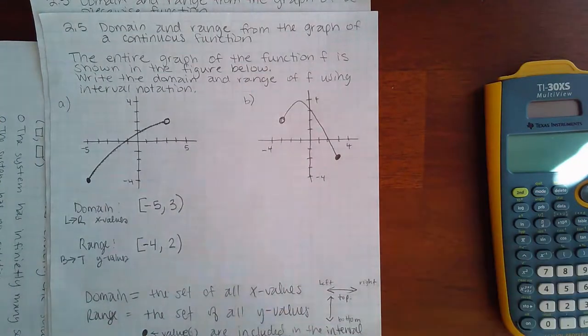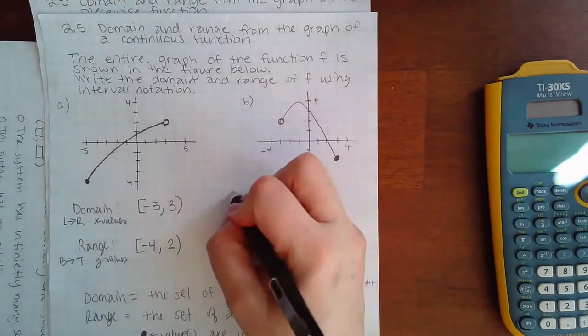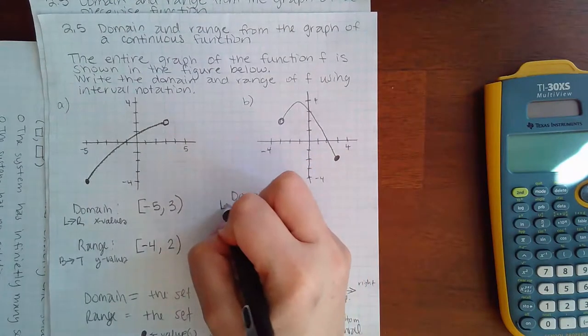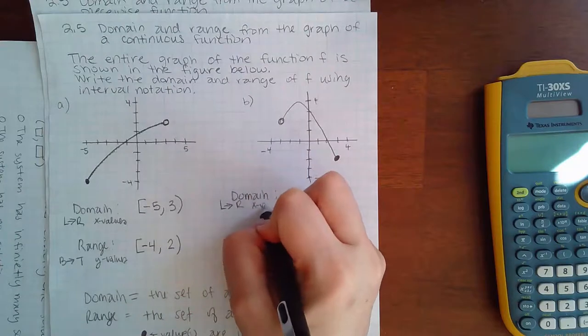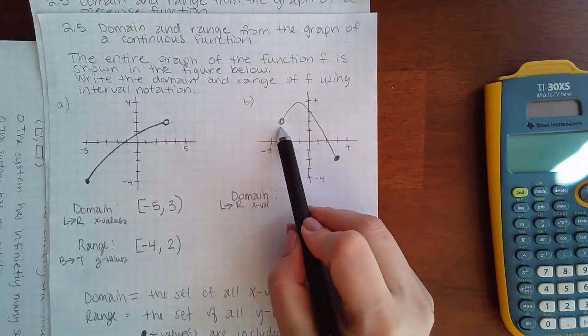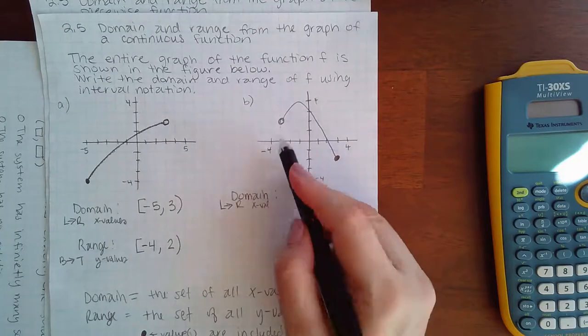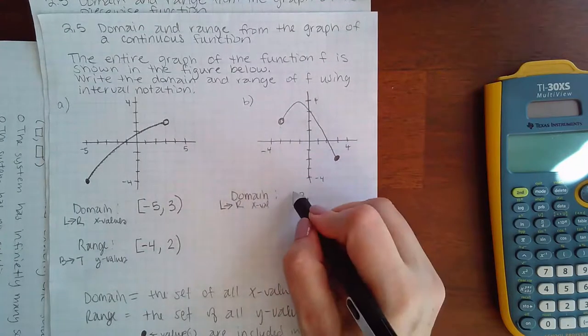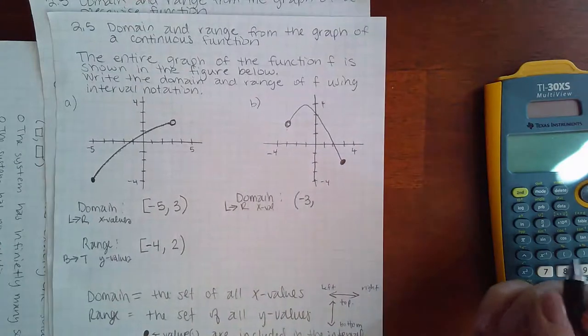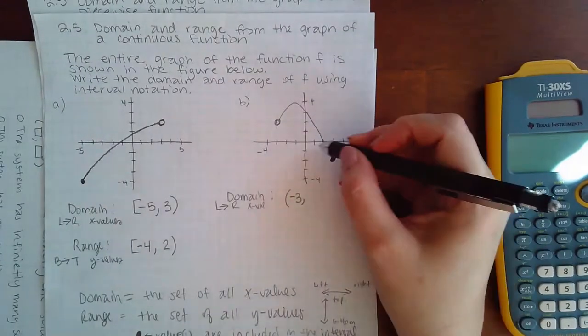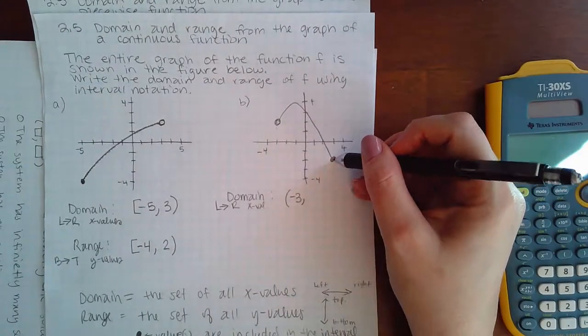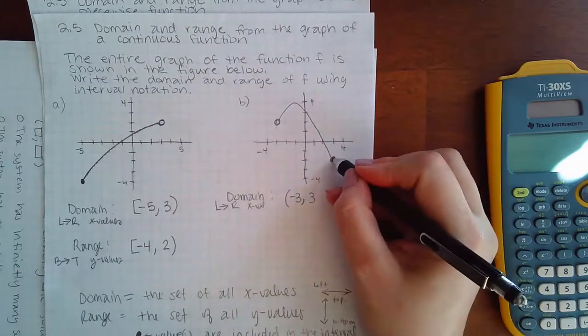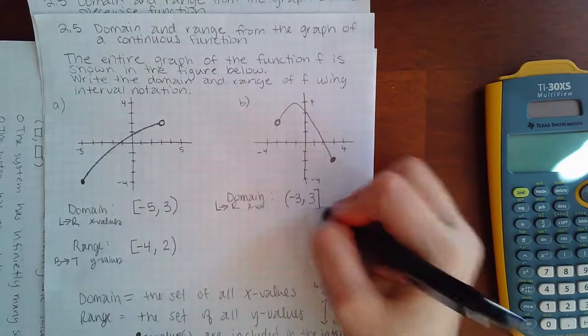Now let's look at the other graph and do the same exact thing. So for domain, remember two things: left to right, and its x values. So this is how far to the left the graph goes, and that x value is negative 3. And it has an open dot, which means I should be using a parenthesis. Now the graph goes all the way to the right until it gets to this spot, which is a positive 3, and it has a solid dot, which means I will use a bracket.